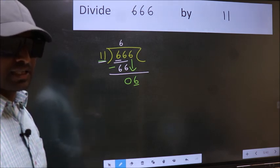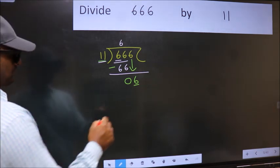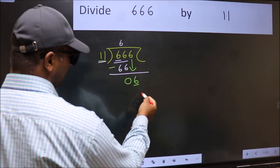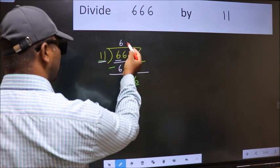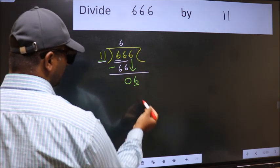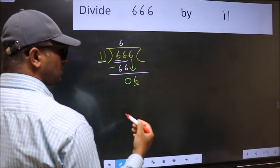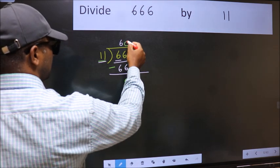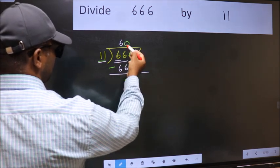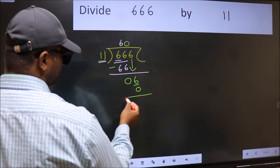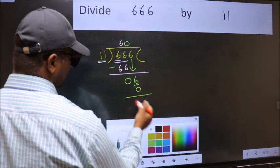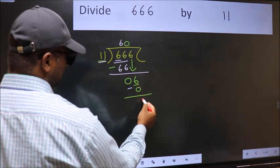what you should think of doing is, which number should we take here? If I take 1, we will get 11, but 11 is larger than 6. So what we should do is take 0. So 11 into 0 is 0. Now you should subtract. 6 minus 0 is 6.